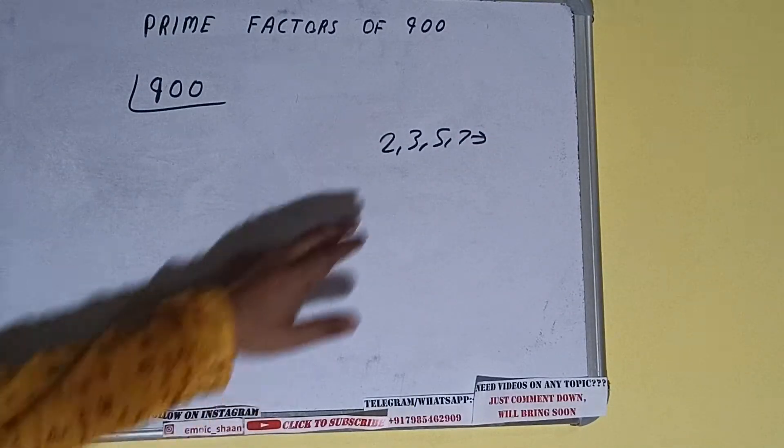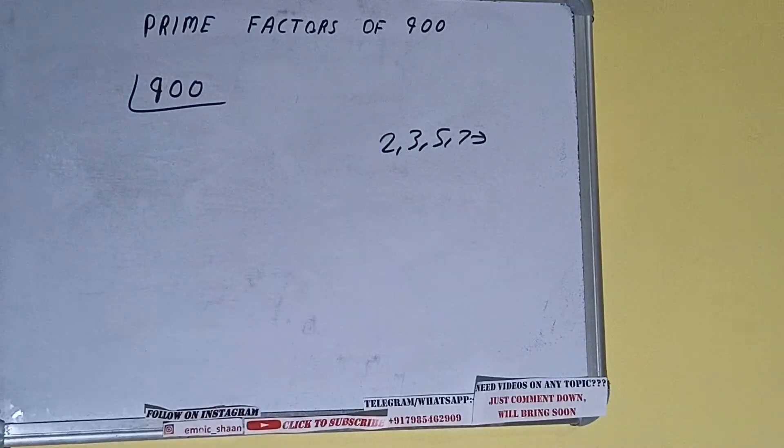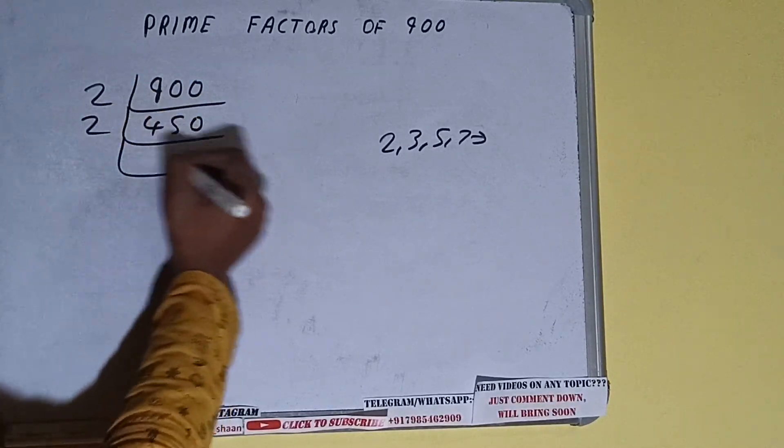So we will check with the lowest prime number we have, that is 2. Is the number 900 divisible by 2? Yes it is because the number is even and we will be having 450. 450 is again divisible by 2.